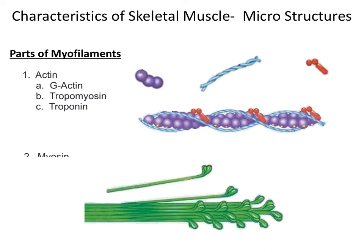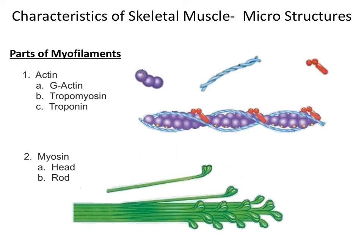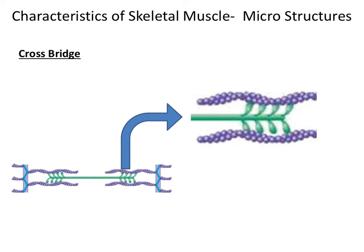The next myofilament is myosin. Myosin is made up of two parts: the head, which performs a crossbridge with the active binding site of G-actin, and the rods. Actin is known as the thin filament, and myosin is known as the thick filament. It is the interaction between actin and myosin that causes a muscle contraction. Finally, the binding of the myosin head to the active binding site of G-actin is what we call a crossbridge.